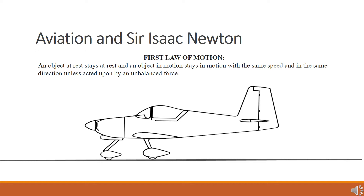If an aircraft is sitting on the ground, that does not mean that there are no forces acting upon it. The weight of the aircraft is always present. Weight is a force directed toward the center of the earth, equal to the product of the mass of the object and the acceleration of gravity at that location. Weight is a force acting on the aircraft pushing it downward. The fact that the aircraft is not moving indicates that there is another force, equal to the force of weight, but acting in an opposite or upward direction. That force is provided by the earth itself. Because the forces cancel each other out, there is no change in velocity, and the aircraft sits in one place.